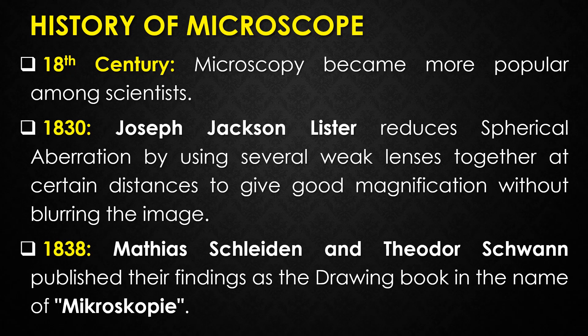In 1838, two German scientists well known for cell theory — Matthias Schleiden and Theodor Schwann — proposed that cells were the building blocks of plant and animal life. They also published their findings as a drawing book under the name Microscopy.